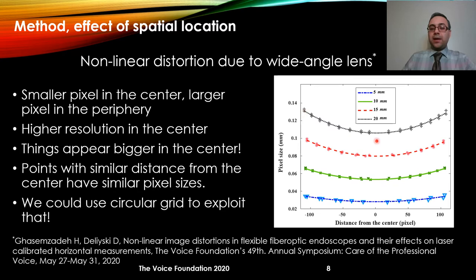This means that if an object is in the center of the image, it will produce a bigger image. However, if that object moves toward the periphery, the same object will produce a smaller image. Another point is that there is a symmetry in the distortion: points with similar distance from the center have equal pixel sizes. We can use this characteristic and use circular grids for horizontal calibration.